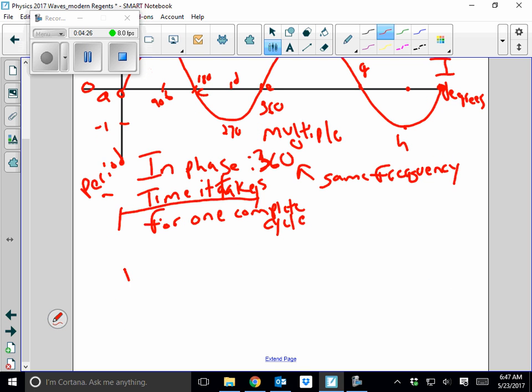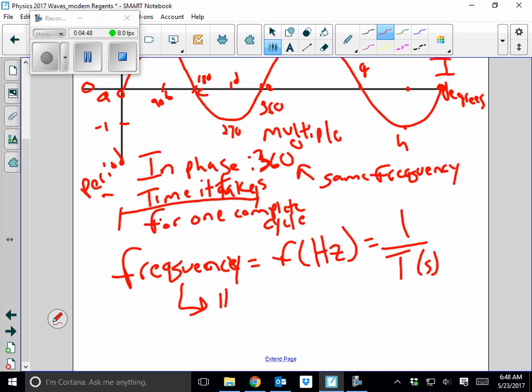Frequency is the inverse of the period. So F which is measured in Hertz equals 1 over the period. The period is measured in seconds. The frequency is the number of cycles per unit of time.